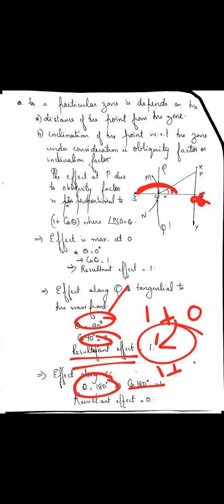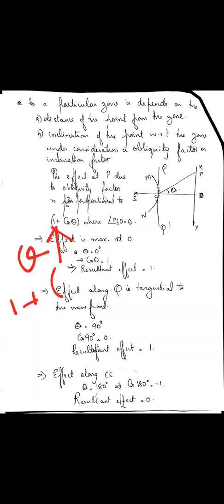When θ = 180°, cos 180° = −1, so 1 + cos θ = 1 + (−1) = 0. The resultant effect is 0. So in all these cases, as the angle of inclination θ increases, (1 + cos θ) decreases, meaning the obliquity factor decreases. If the obliquity factor decreases, the effect at P due to that zone will decrease.